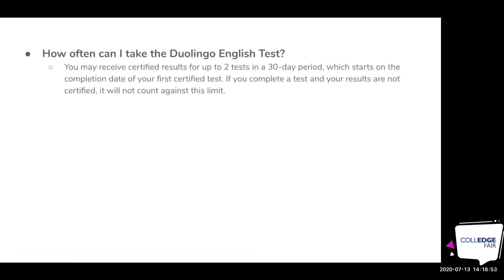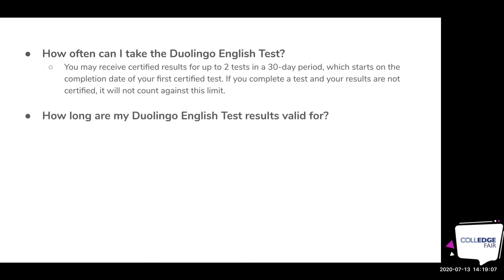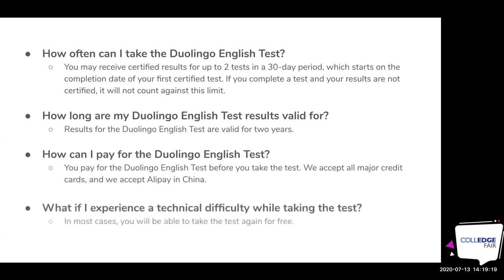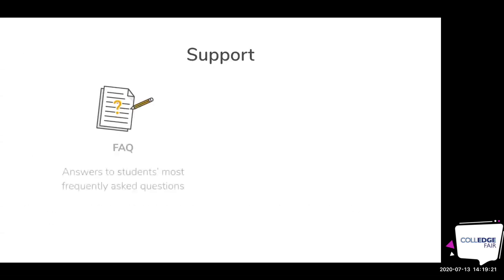How often can I take the test? You can take the test twice within a 30-day period. Once that period ends, you can take it two more times in the next 30-day period. Most people take it once or twice depending on how they did the first time. Your results are valid for two years. You can pay with a variety of credit cards. If you have any technical difficulties, we will let you take it again for free.